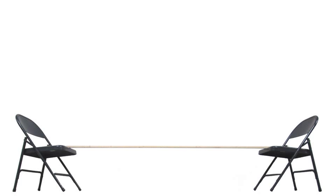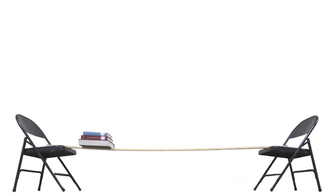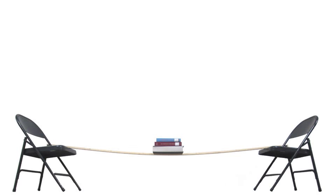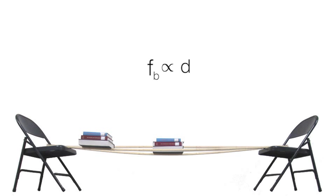Next, the student observes how the location of a load along a beam affects the bending stress. He notices that placing the load only a short distance from the beam support causes only a slight deflection, and therefore a low amount of bending stress, whereas placing the load at a greater distance from the beam supports results in noticeably more deflection, or higher bending stress. So, the greater the distance from the beam supports that a load is placed, the greater the bending stress, and the lower that distance, the lower the bending stress. Therefore, the student determines that bending stress is directly proportional to the distance d that the load is placed from the beam supports.